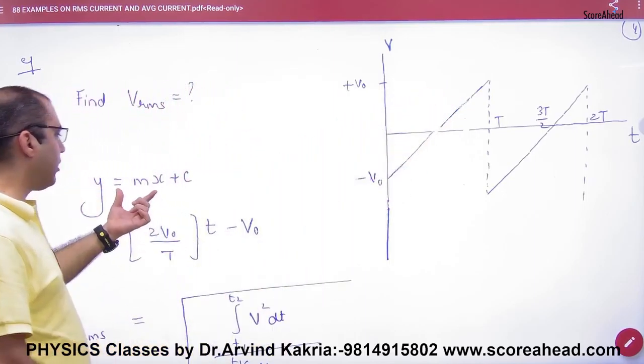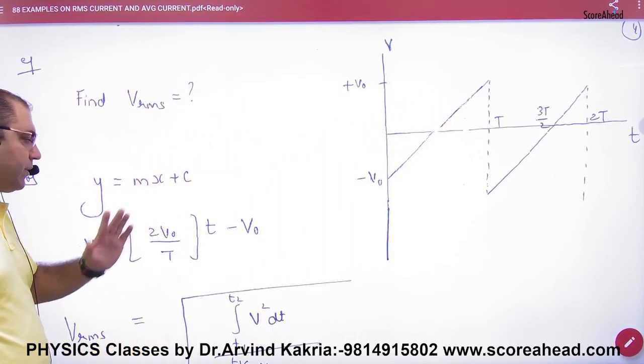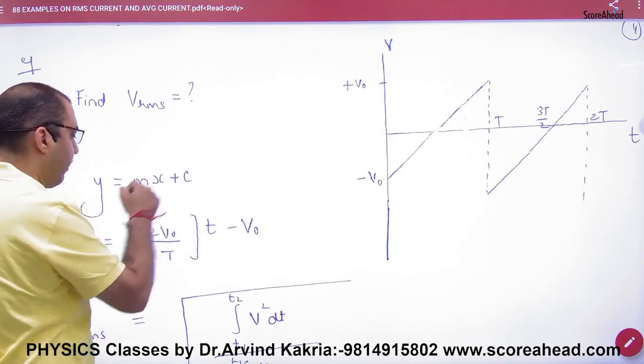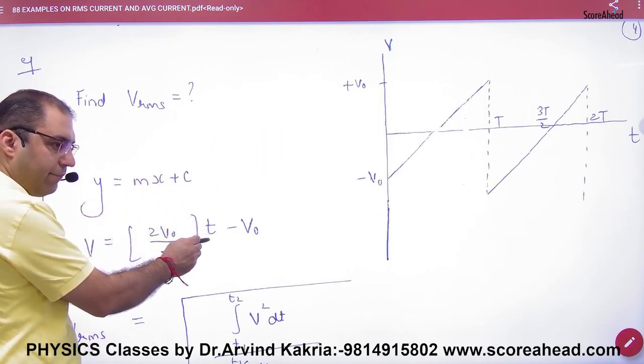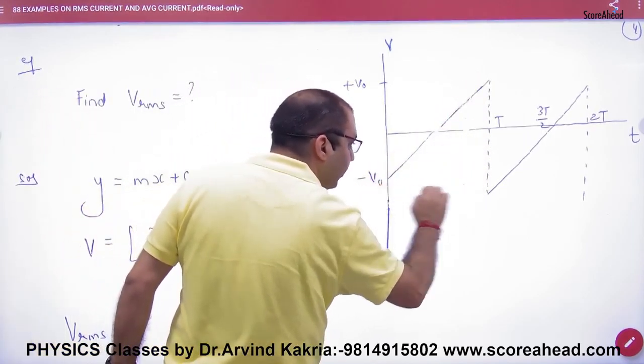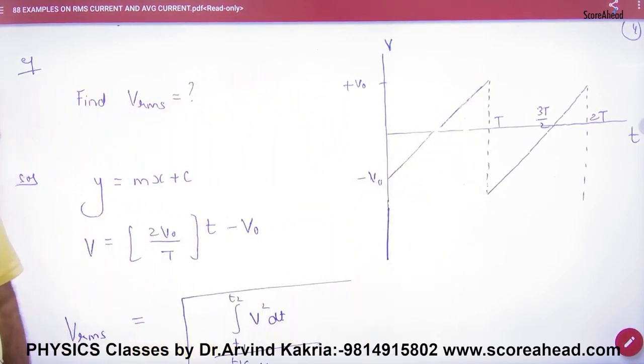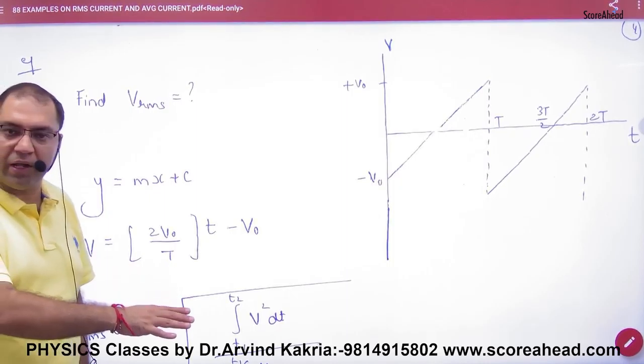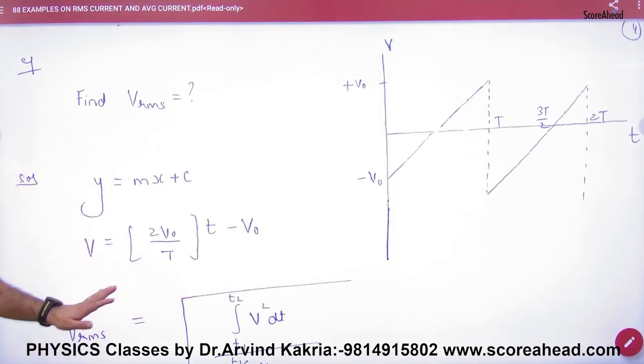So if we remove v's formula, then the student of math will put straight line equation. Take this line. This line equation can be represented by y equals mx plus c. So voltage on y axis and time on x axis. What is intercept? Minus v₀ and what is slope? 2v₀ upon t. This slope and the intercept and the value of v, the question is solved.